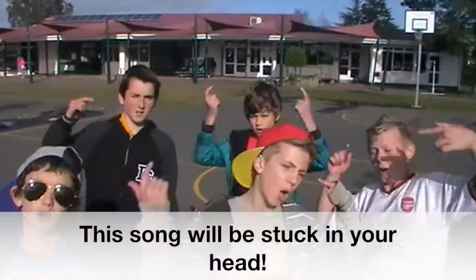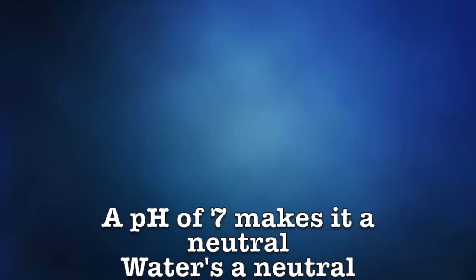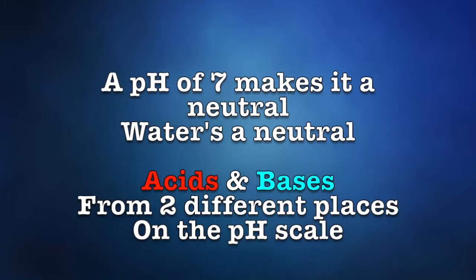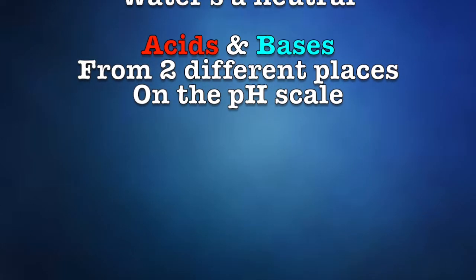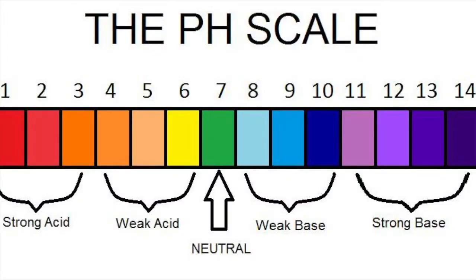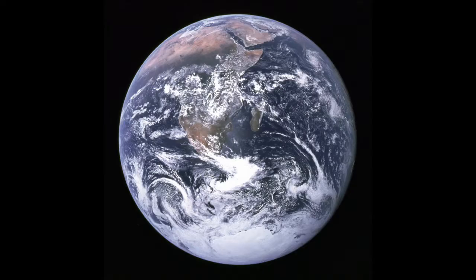And if we've done our job properly, this song will be stuck in your head. A pH of 7 makes it a neutral — water's a neutral. Acids and bases are from two different places on the pH scale, on the pH scale. Acids and bases have their places in our world.